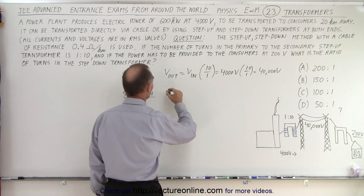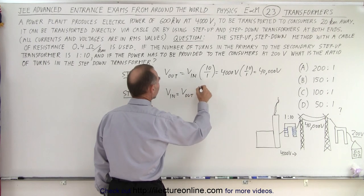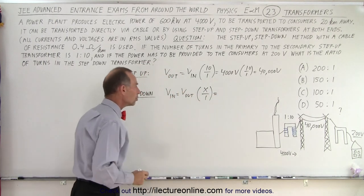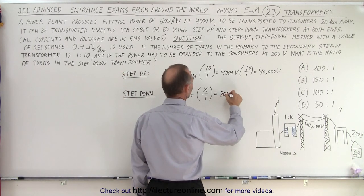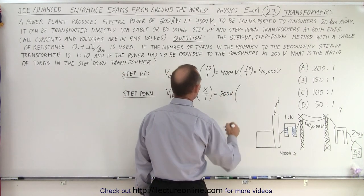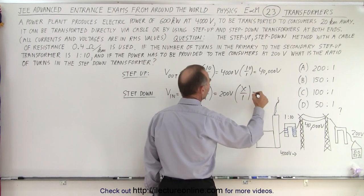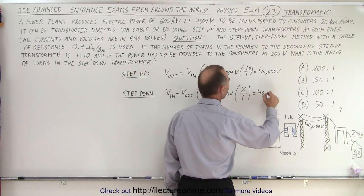So we have to switch these here. So we have V_in equals V_out times X over 1, which is equal to—what's the V_output? Well, we need 200 volts, and we need some X over 1 so that this will be equal to the input voltage, which is 40,000 volts.